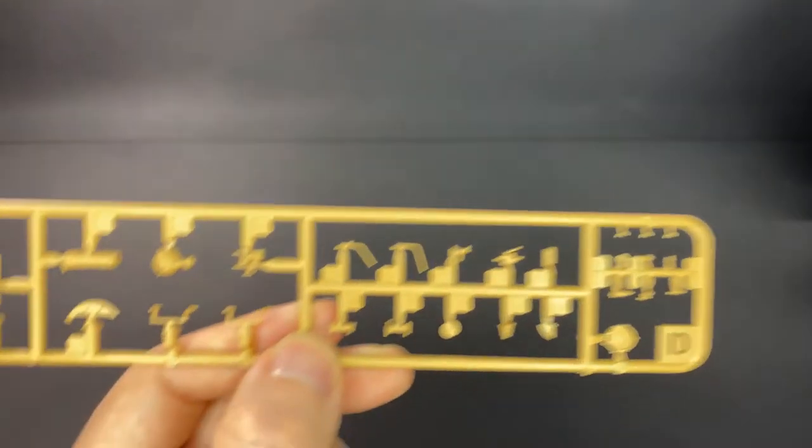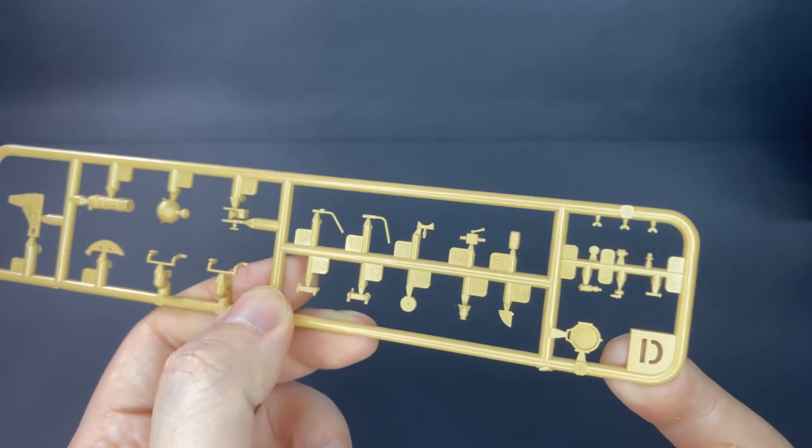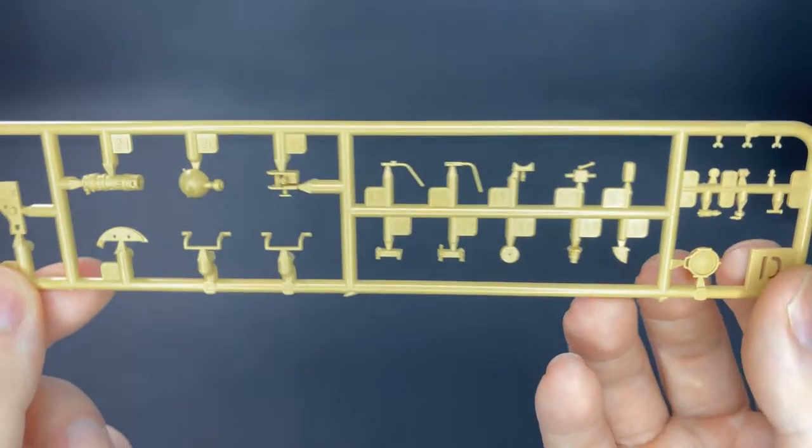Next up is sprue D, a rather small sprue, mainly the handlebars, lights, and other little bitsy pieces.